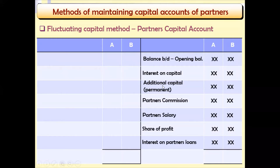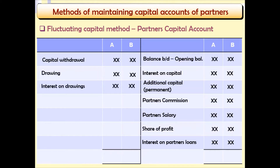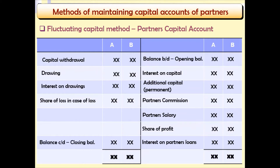In this method, long-term items of capital are combined together with short-term items — the short-term interests of the partners in the business. On the other side, we have capital withdrawal (permanent withdrawal), drawings, interest on drawings, and share of loss in case the partnership makes losses. Then the closing balance is recorded and the account is balanced off.